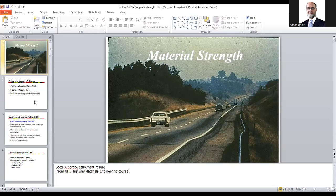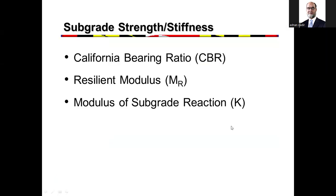We start with the bottom-most layer of a pavement, which is the subgrade. This is one of the key inputs to pavement design. The subgrade strength for designing a flexible pavement is measured using California Bearing Ratio (CBR). When designing a rigid pavement, there is another subgrade parameter called the modulus of subgrade reaction, K. The first two are related to flexible pavement design and the third is modulus of subgrade reaction K.